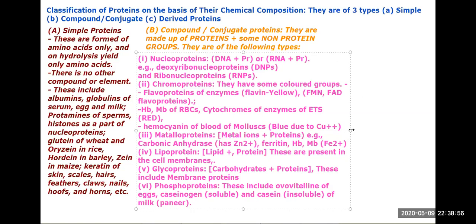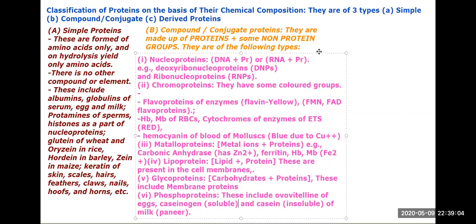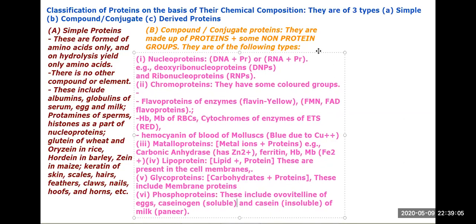When you add lemon juice to milk, caseinogen becomes casein. This is because lactic acid causes a reaction. A change in the protein structure occurs — what was soluble becomes insoluble.